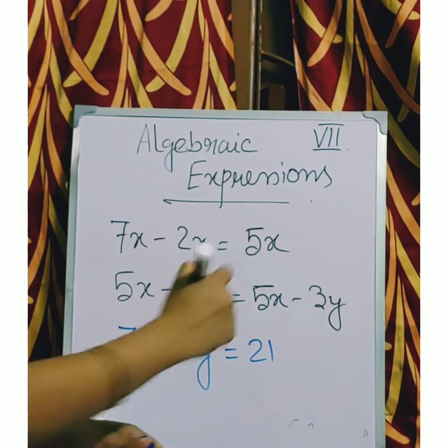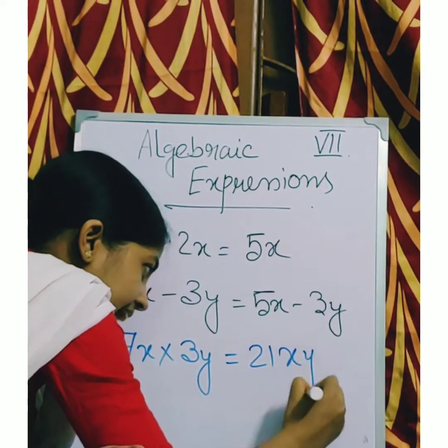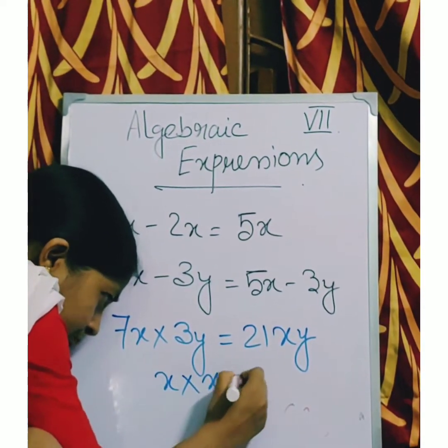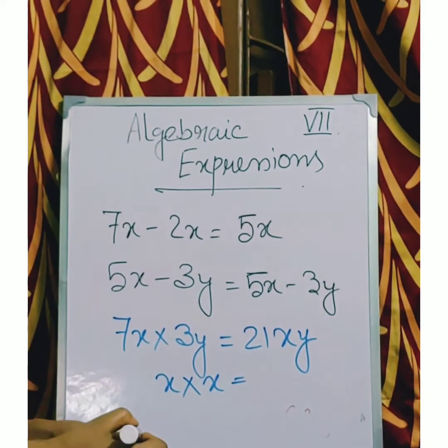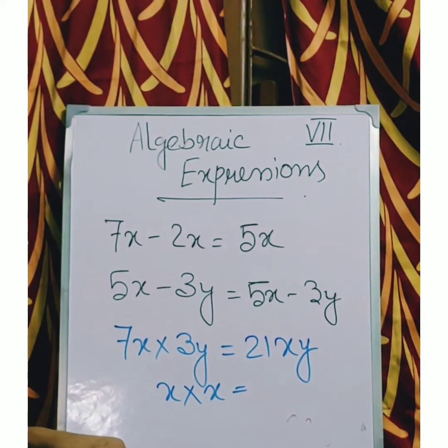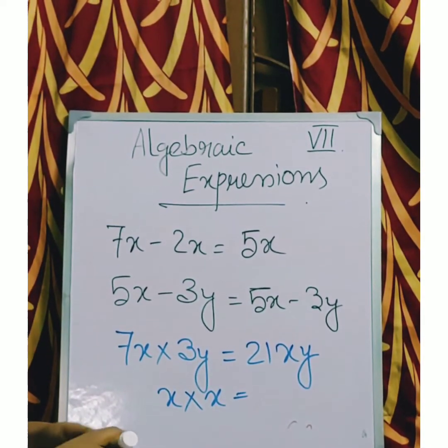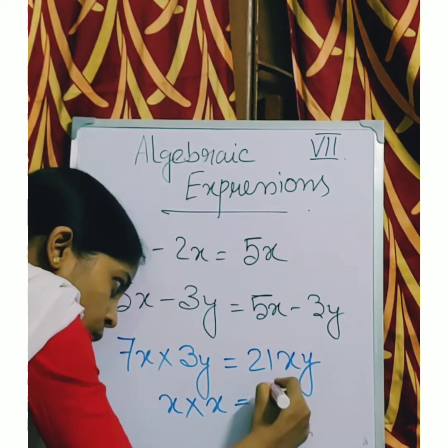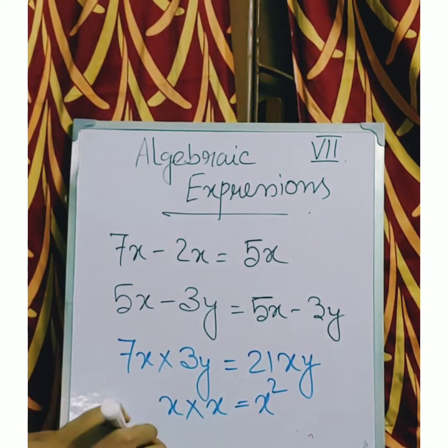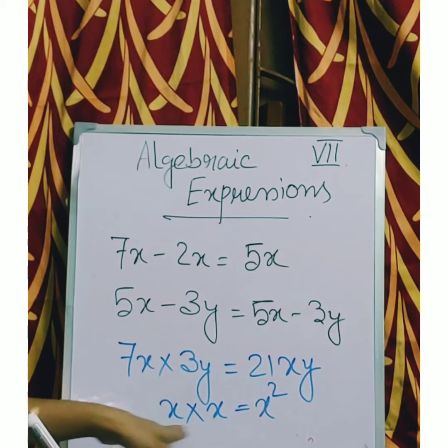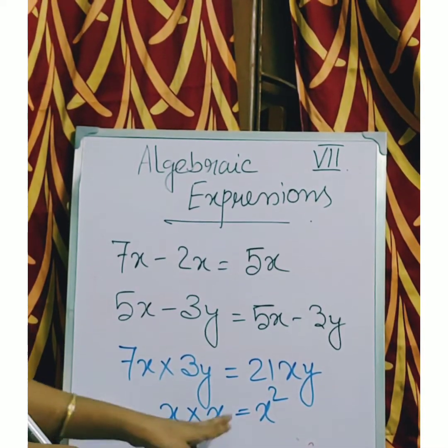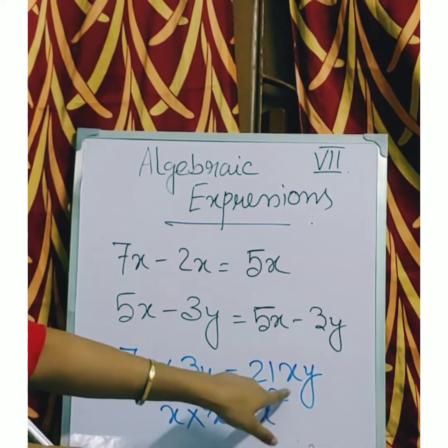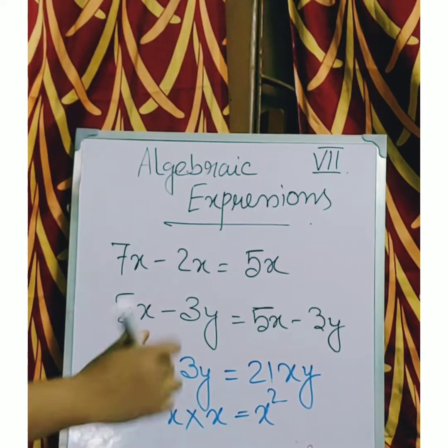But what if it is x into x? What we will write it? Will we write 2x? No. x into x is x square, the power. Now we are multiplying 2x, so the power in prefix will write 2.